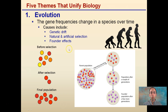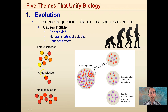Here's a quick overview — before selection we have all these circles that are different colors, sorry if you're color blind. After selection, the red and dark red were favored for this particular environment or stress that occurred. The final population is composed of red and dark red, while the yellows, tans, and oranges were selected against. We also have a migrating population over a couple of generations, and through founder effects we see the purple ones were the most advantageous. So one of the five themes that unify biology is evolution.